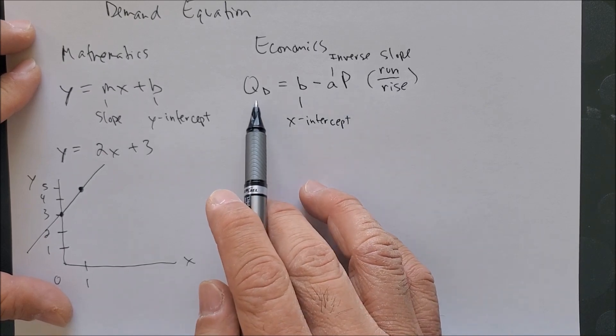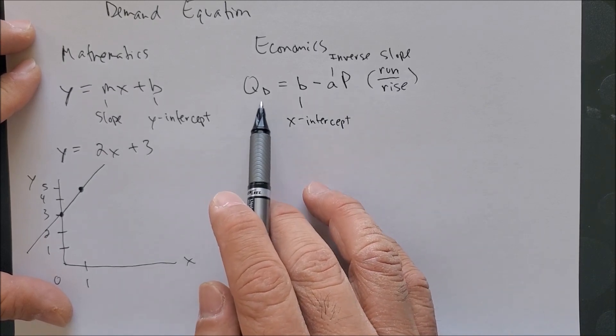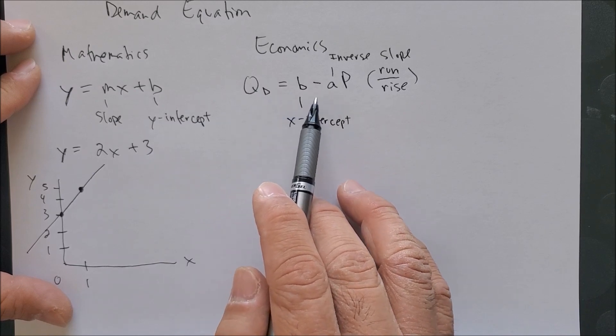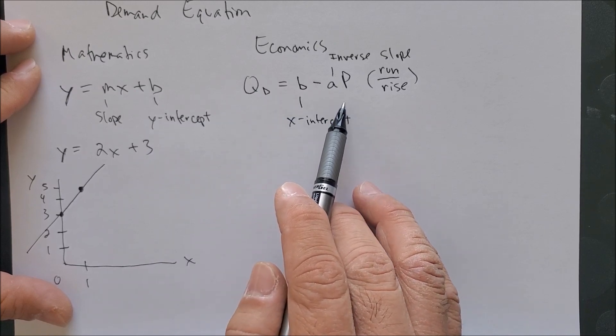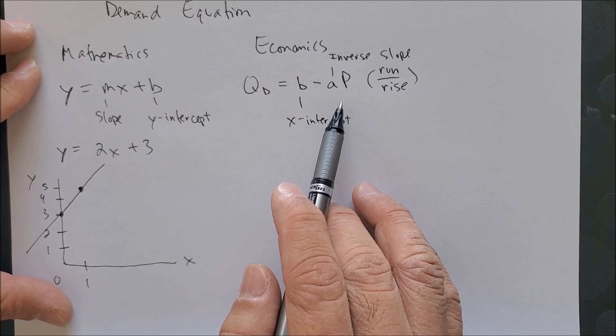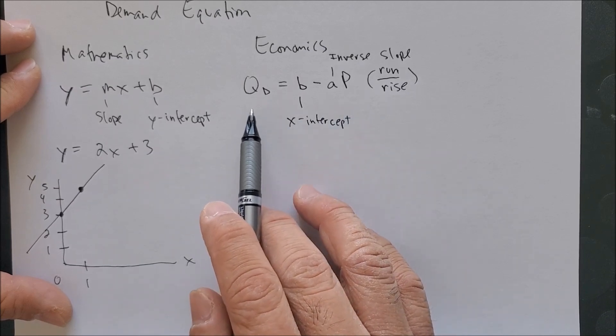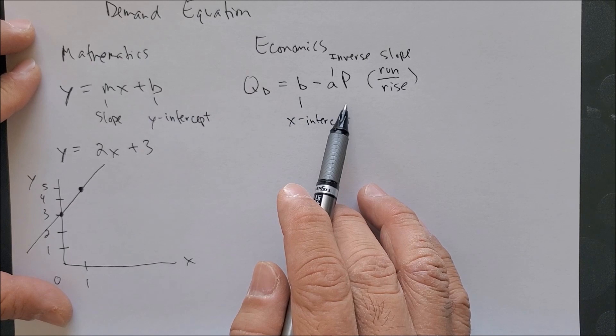So we are going to have, essentially, x is equal to b minus a y. And it would make sense. In economics, quantity depends on the price.